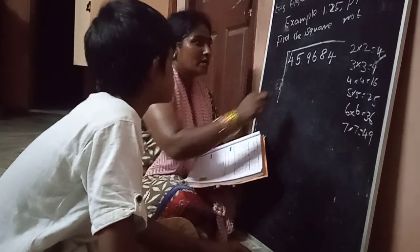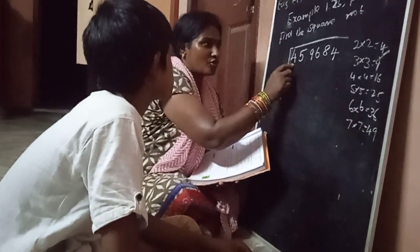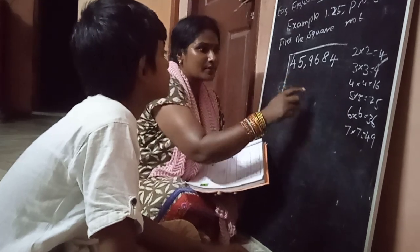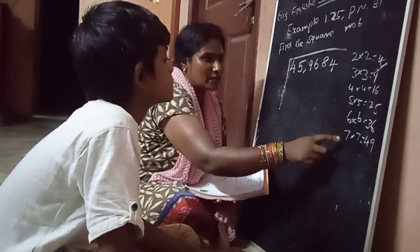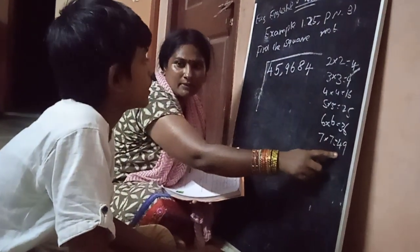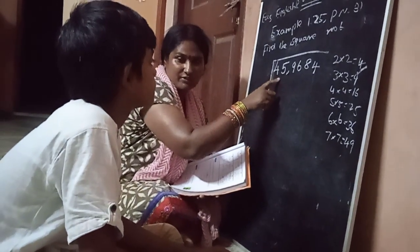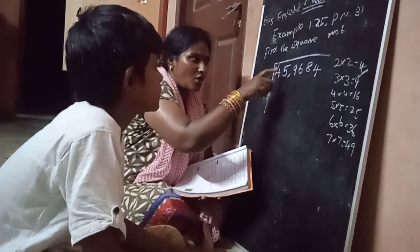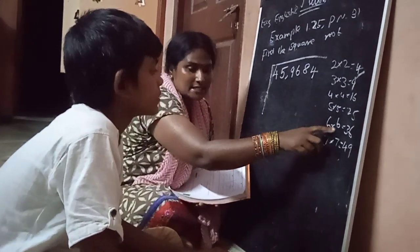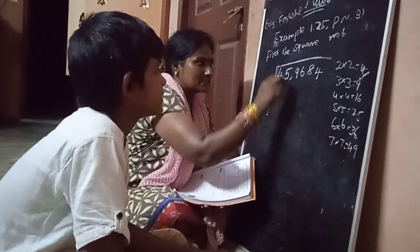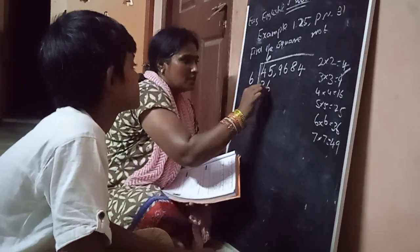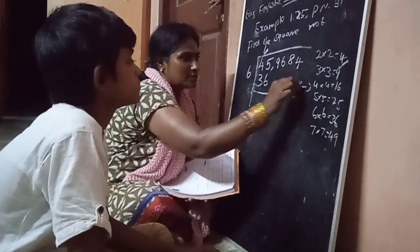Now we have a sum. Number 45 — we group it as 45. Now, 6 times 6 is 36. Then 6, 6, 36. Number 36 is the next step.